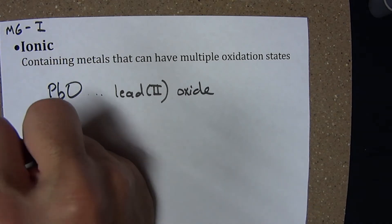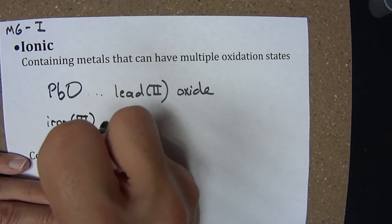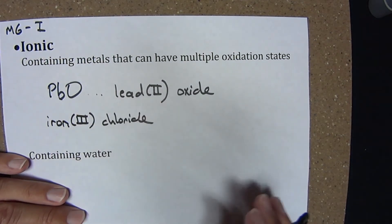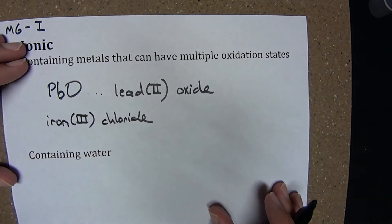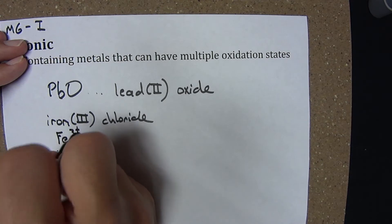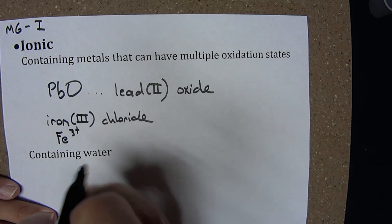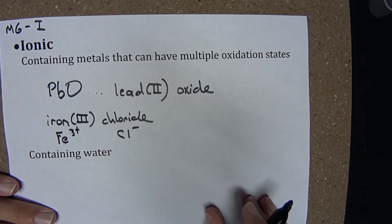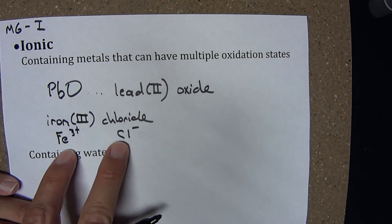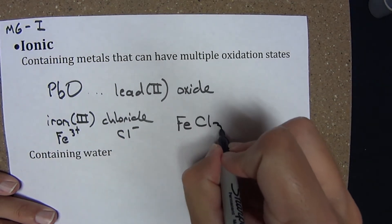Again, we should be able to go both ways. If we had the compound iron(III) chloride, I should be able to come up with a formula. The Roman numeral directly tells me the charge the ion carries. Iron(III) means iron has a +3 oxidation state. Chloride, as we've seen before, is a monovalent anion. To make the net neutral compound, I'll need 3 times the number of chloride ions as I have iron. My chemical formula is FeCl₃.